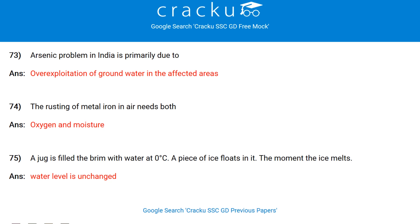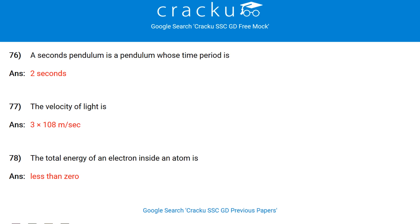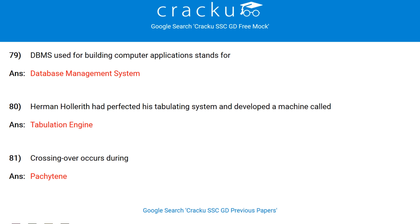Arsenic problem in India is primarily due to overexploitation of groundwater in the affected areas. The rusting of metal iron in air needs both oxygen and moisture. A jug filled to the brim with water at 0°C has a piece of ice floating in it — the moment the ice melts, the water level remains unchanged. A seconds pendulum is a pendulum whose time period is 2 seconds. The velocity of light is 3×10⁸ m/s.